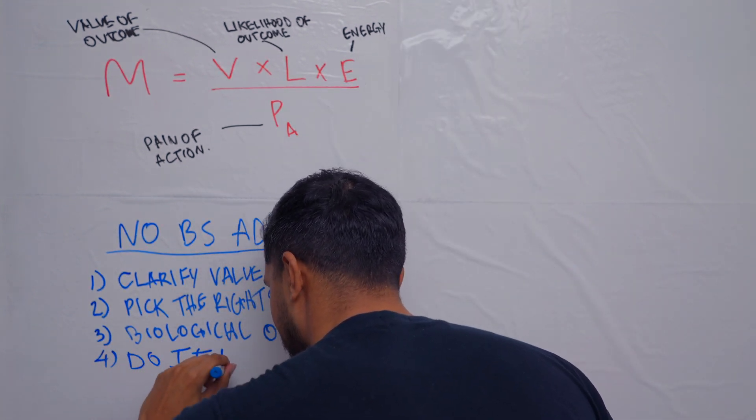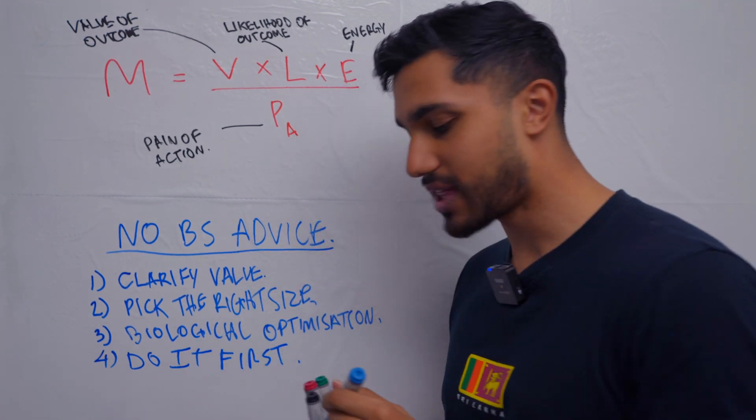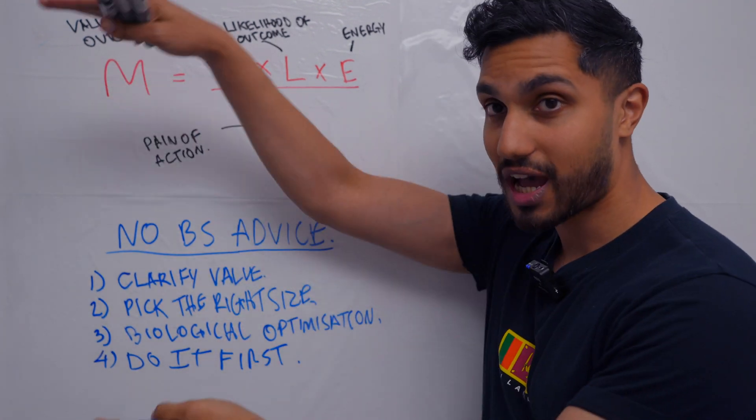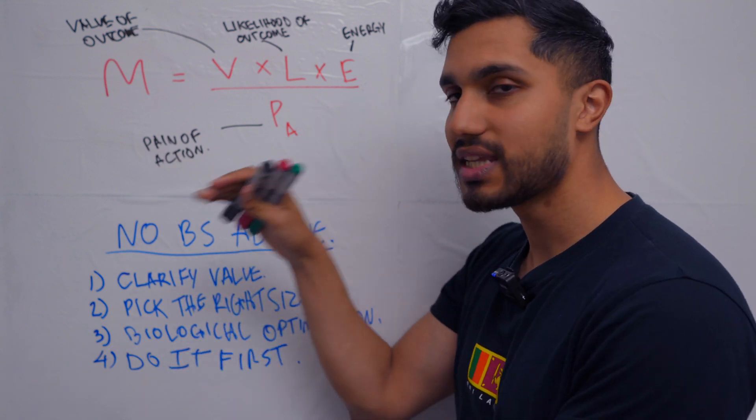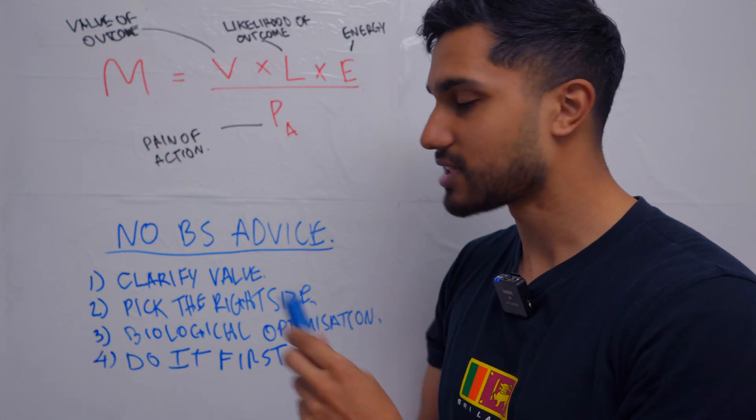Do it first, first thing in the morning. Do that action because when you have your whole battery, you have all the energy in the world to motivate yourself to do this action. That's all you need to do. This formula is how you make motivation inevitable.